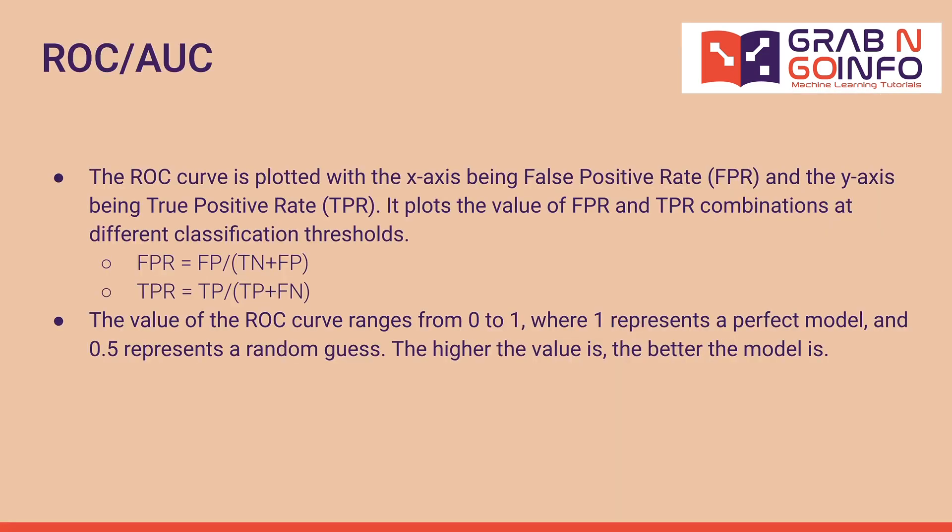The ROC curve is plotted with the x-axis being false positive rate and the y-axis being true positive rate. It plots the value of false positive rate and true positive rate combinations at different classification thresholds. The false positive rate is calculated by the number of false positives divided by the total of true negatives and false positives. The true positive rate is calculated by the number of true positives divided by the total of true positives and false negatives. The value of the ROC curve ranges from 0 to 1, where 1 represents a perfect model and 0.5 represents a random guess. The higher the value, the better the model.